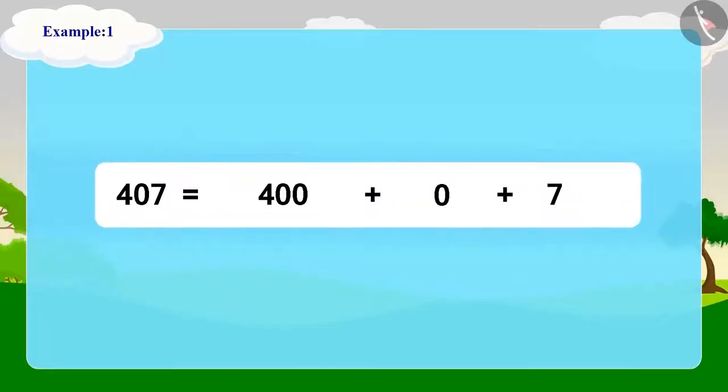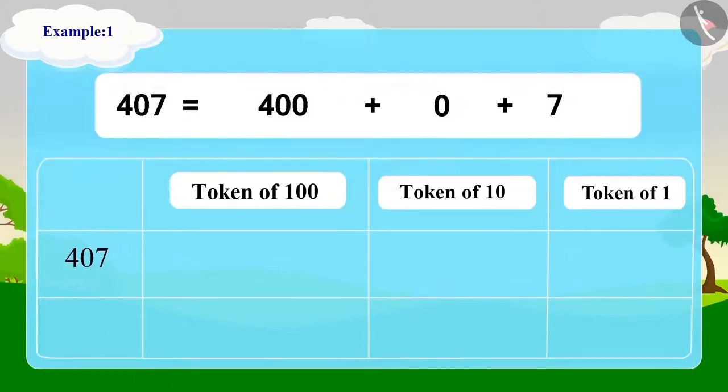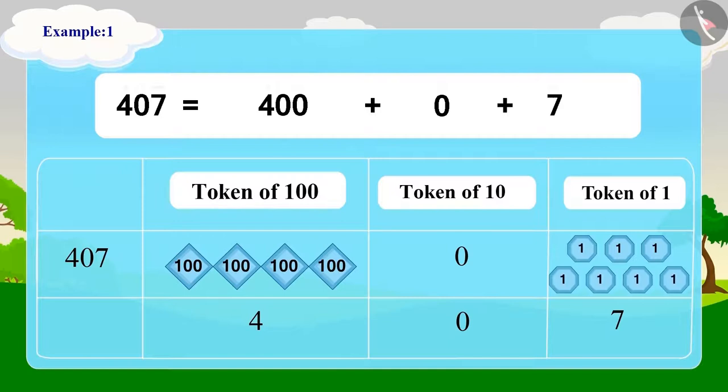We can write 407 in this way in the expanded form. We can write 400 as four tokens of 100. There are no two-digit numbers here, so we will not use any token of 10. We will write zero in the place of the token of 10, and seven will be shown using seven tokens of one in this manner.